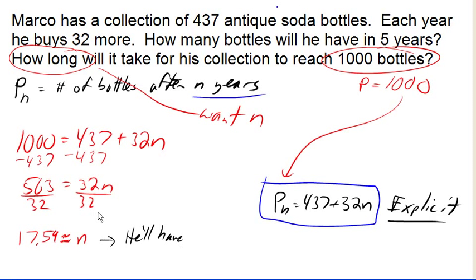So he'll have 1,000 bottles in about 18 years. And now we've been able to solve this problem using that explicit linear equation.